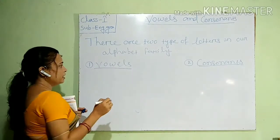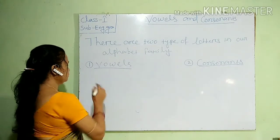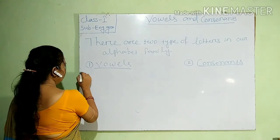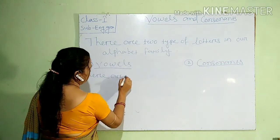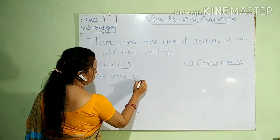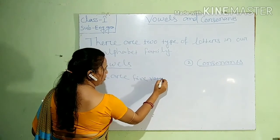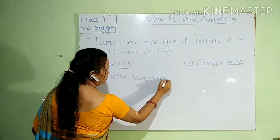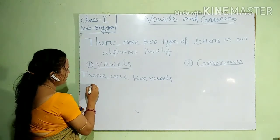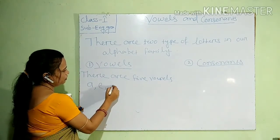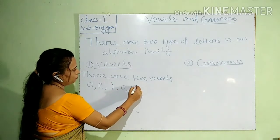So, how many vowels and what are they? There are five vowels. And what are they? They are A, E, I, O and U.